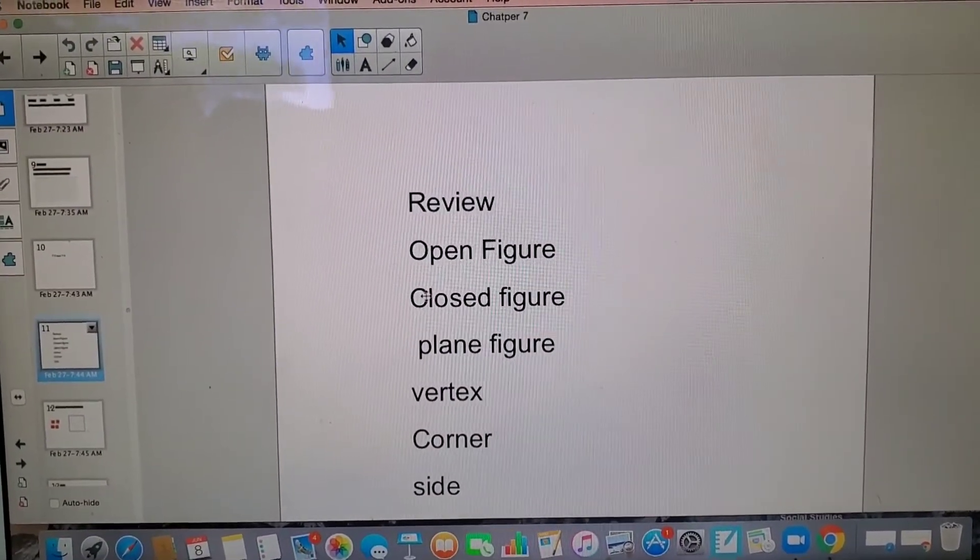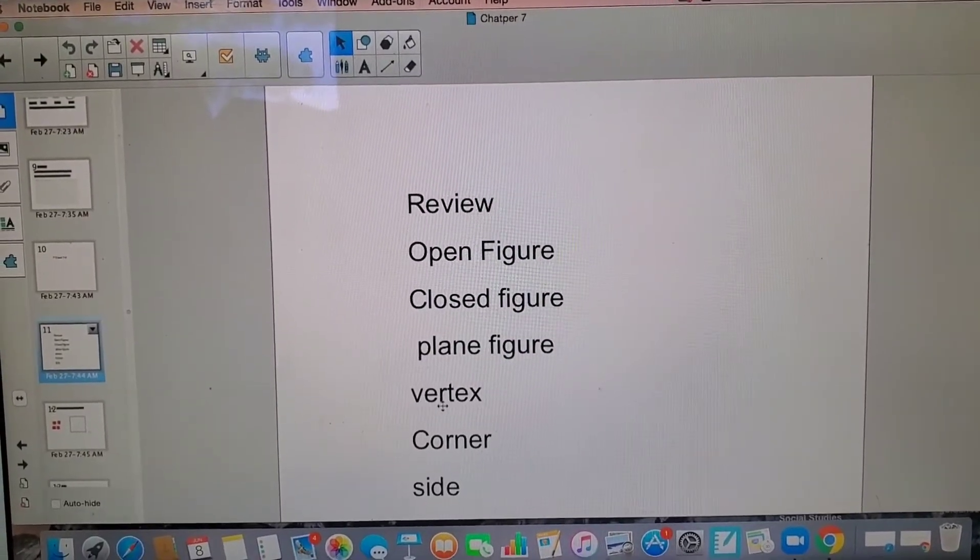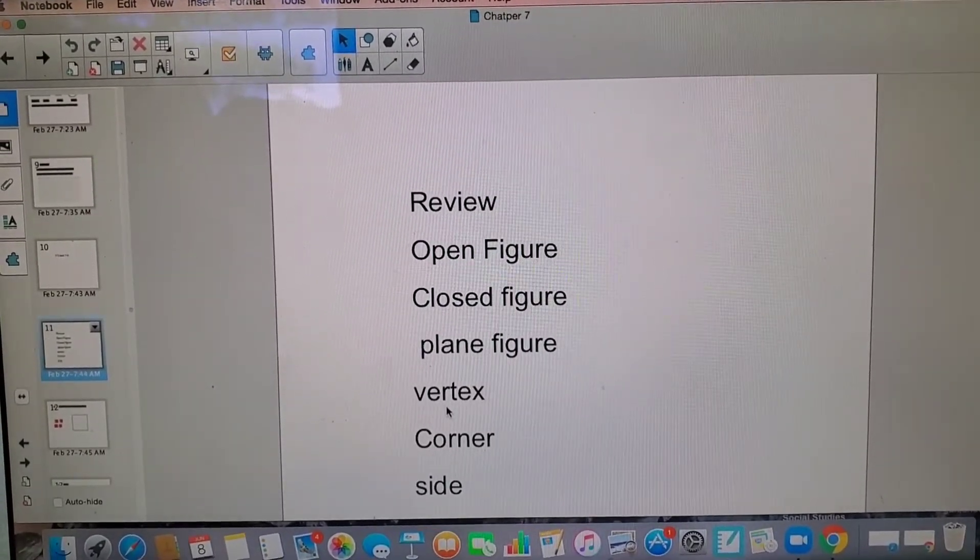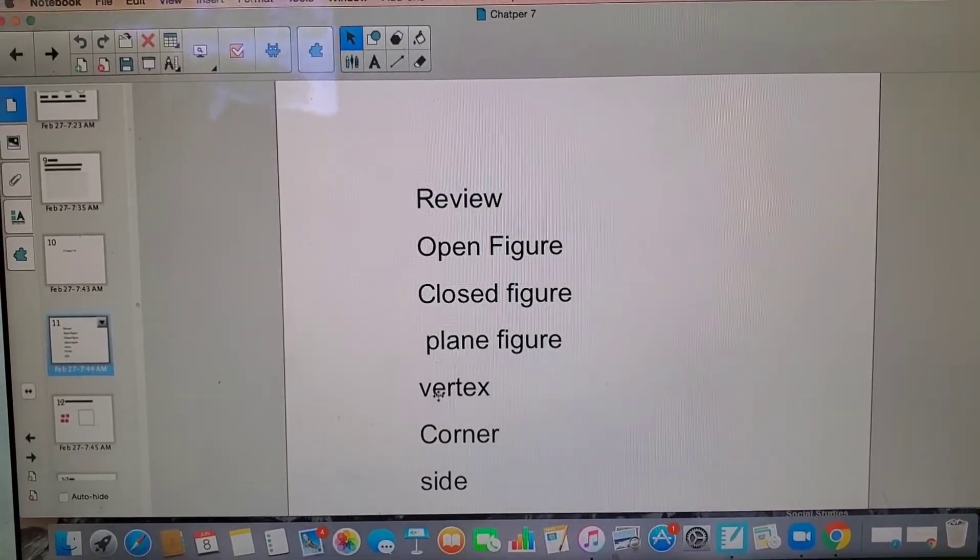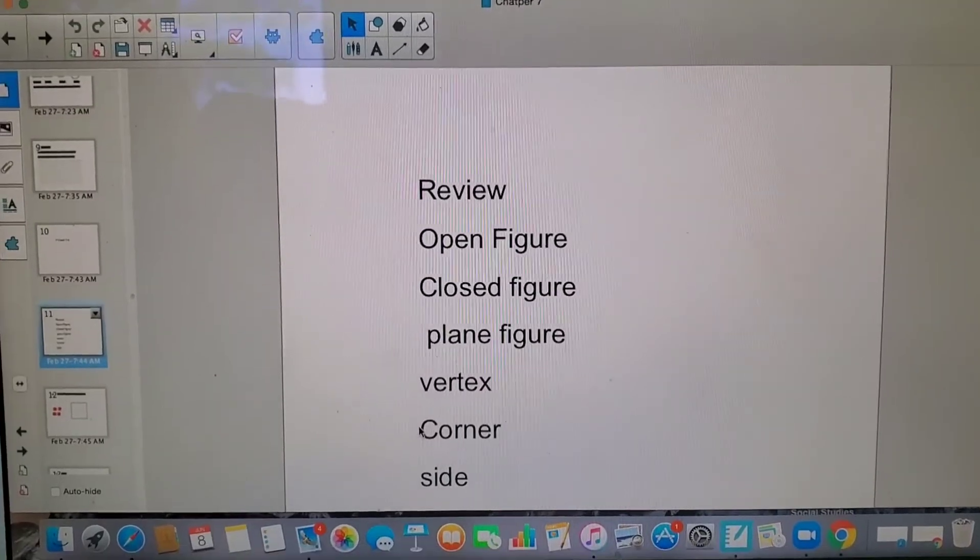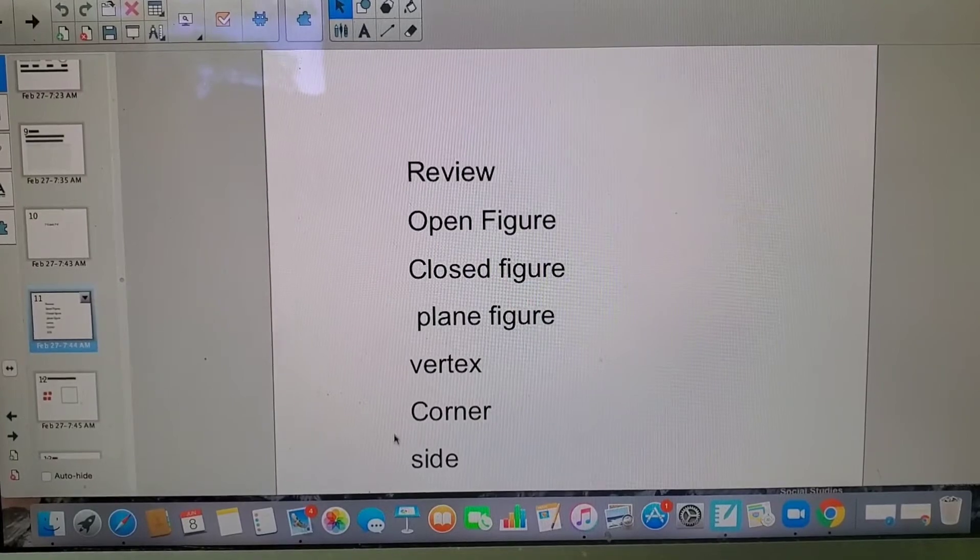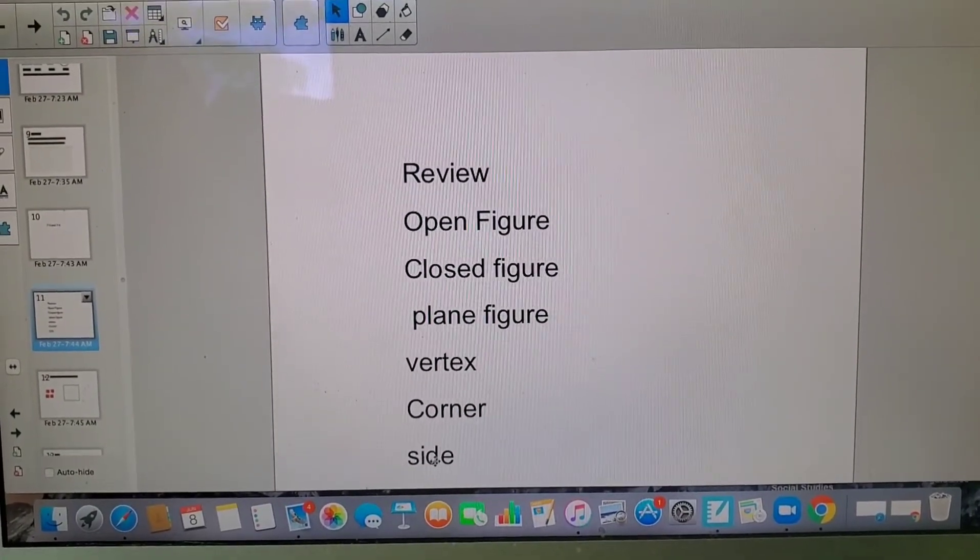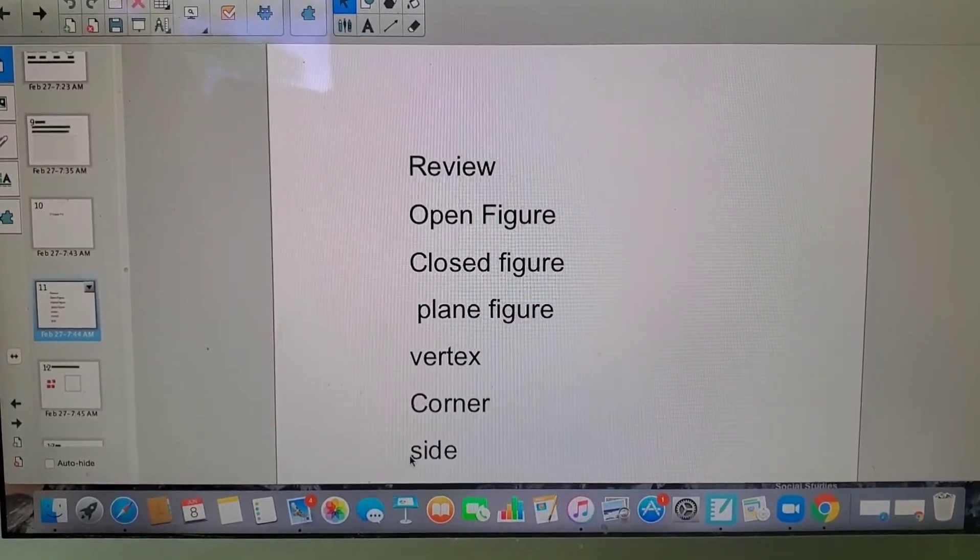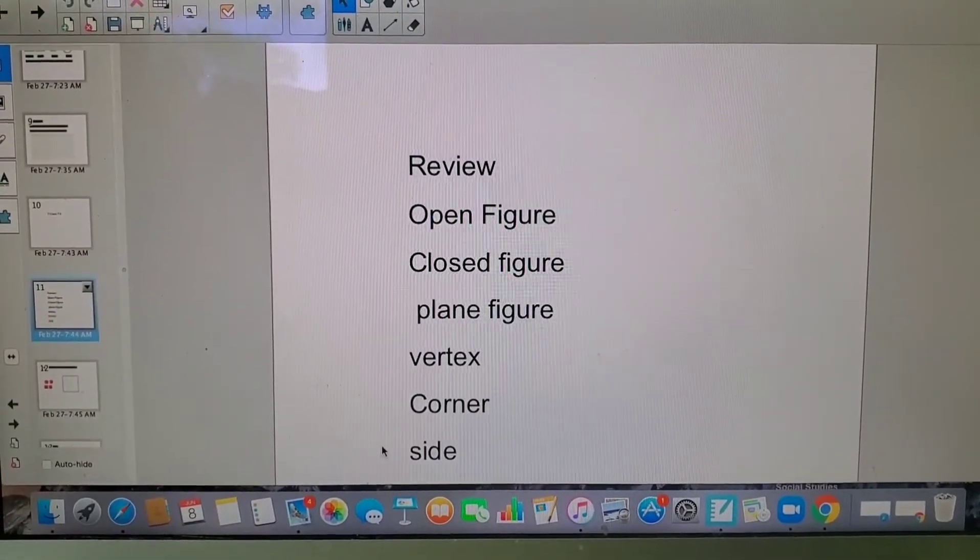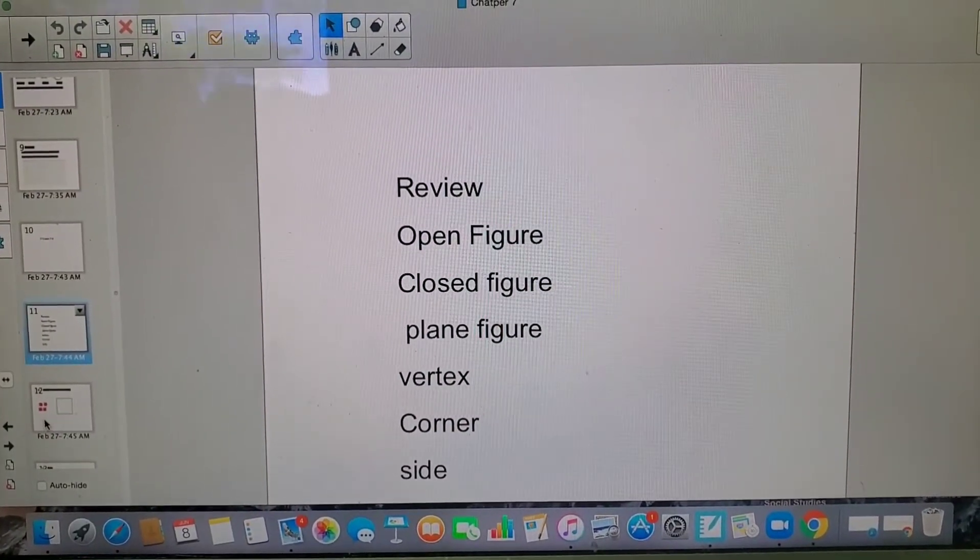What's a plane figure? That's right, it's the same thing as a closed figure. Oh, hard one—what's a vertex? Right, a vertex is the same thing as a corner. It's where two sides meet. A corner is where two sides actually meet. So what's a side? You guys are right, a side is a straight line on a shape or a figure.